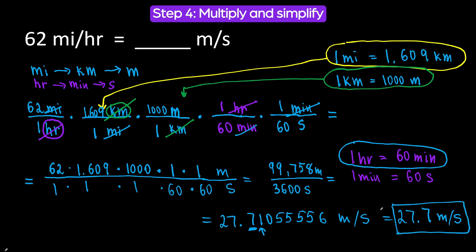So 62 miles per hour is approximately 27.7 meters per second. I hope this is helpful. If you get frustrated with conversions, do not give up — just take a break and come back and try again. You are tremendously loved by God. For God so loved the world that He gave His one and only Son, that whoever believes in Him shall not perish but have eternal life. I am leaving you with this awesome news, and I will see you next time.